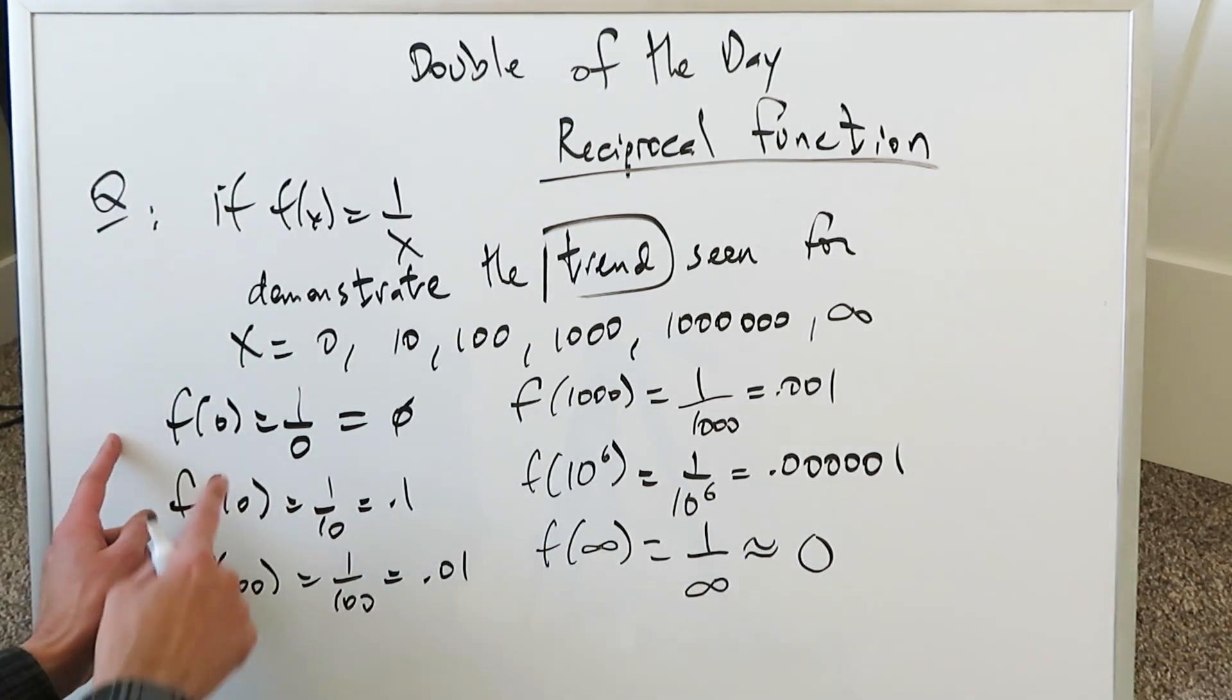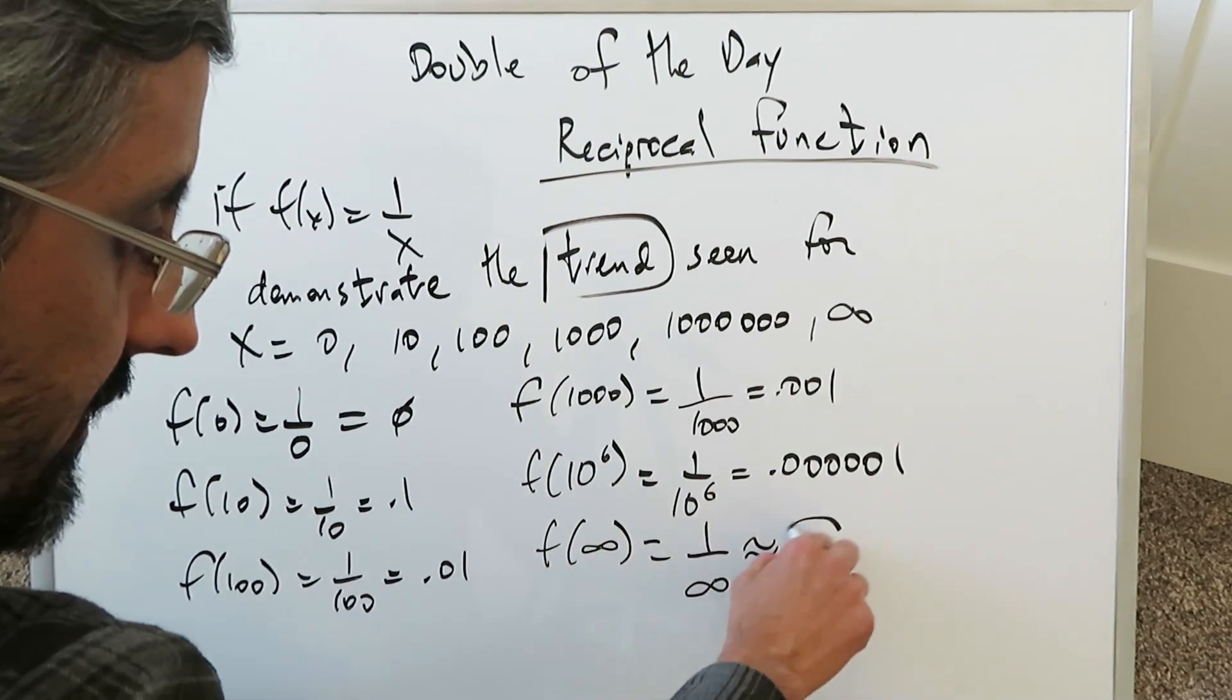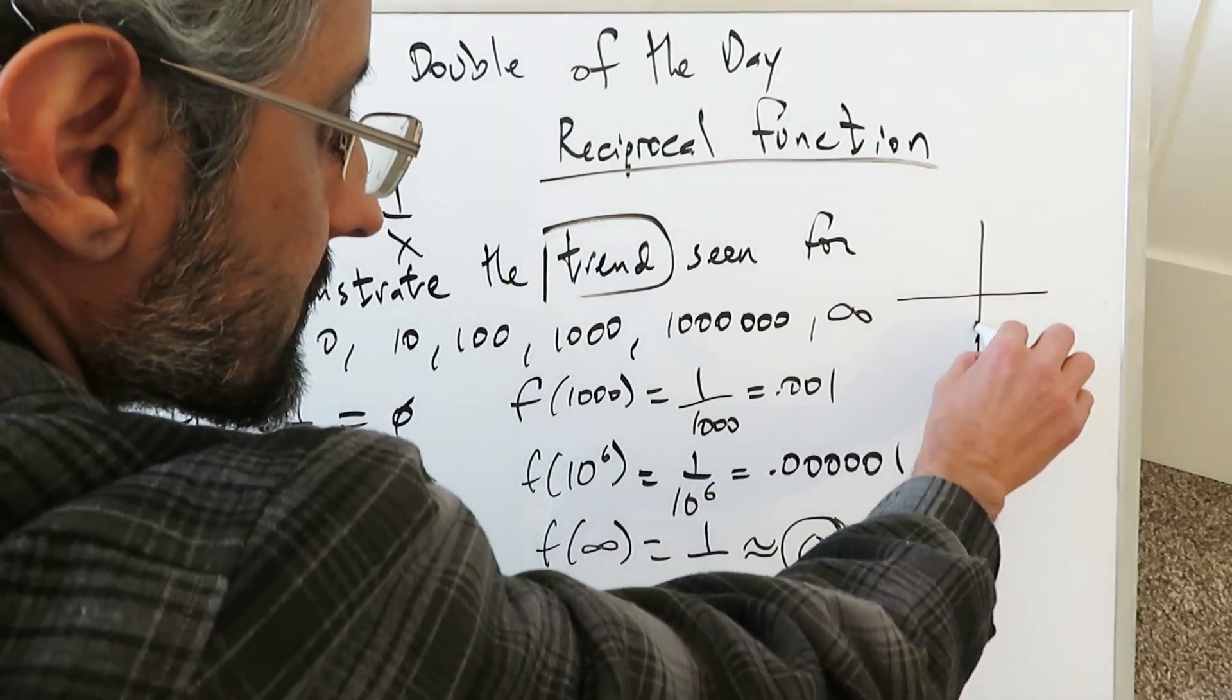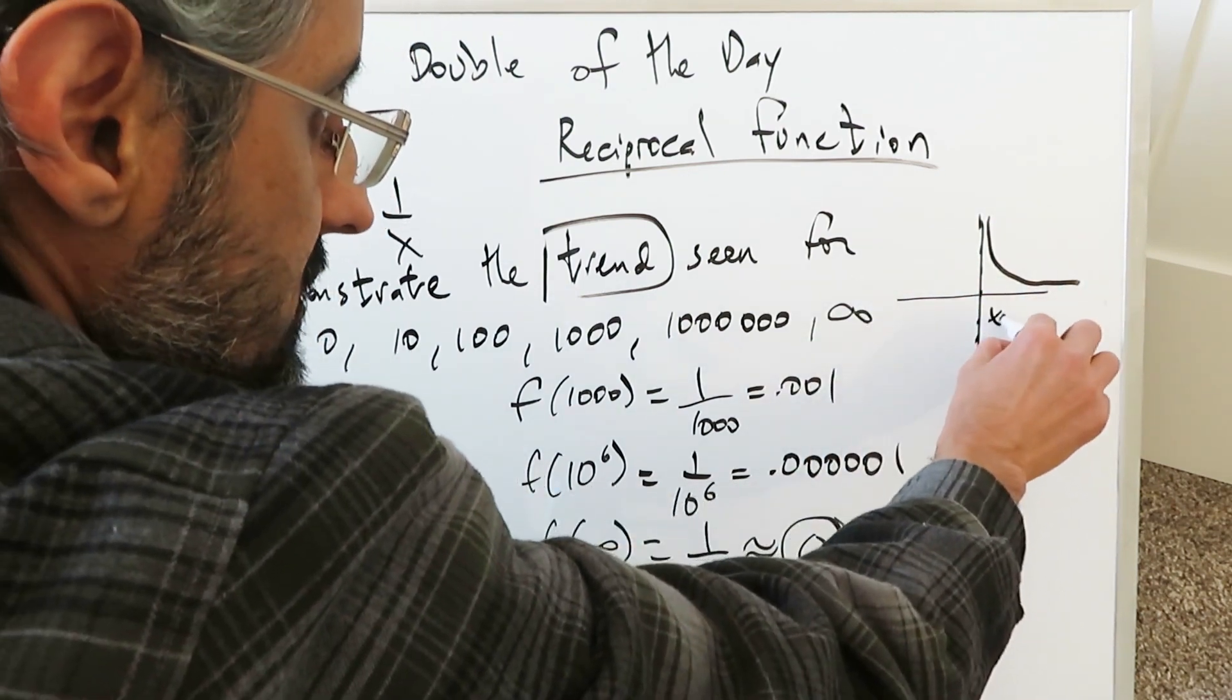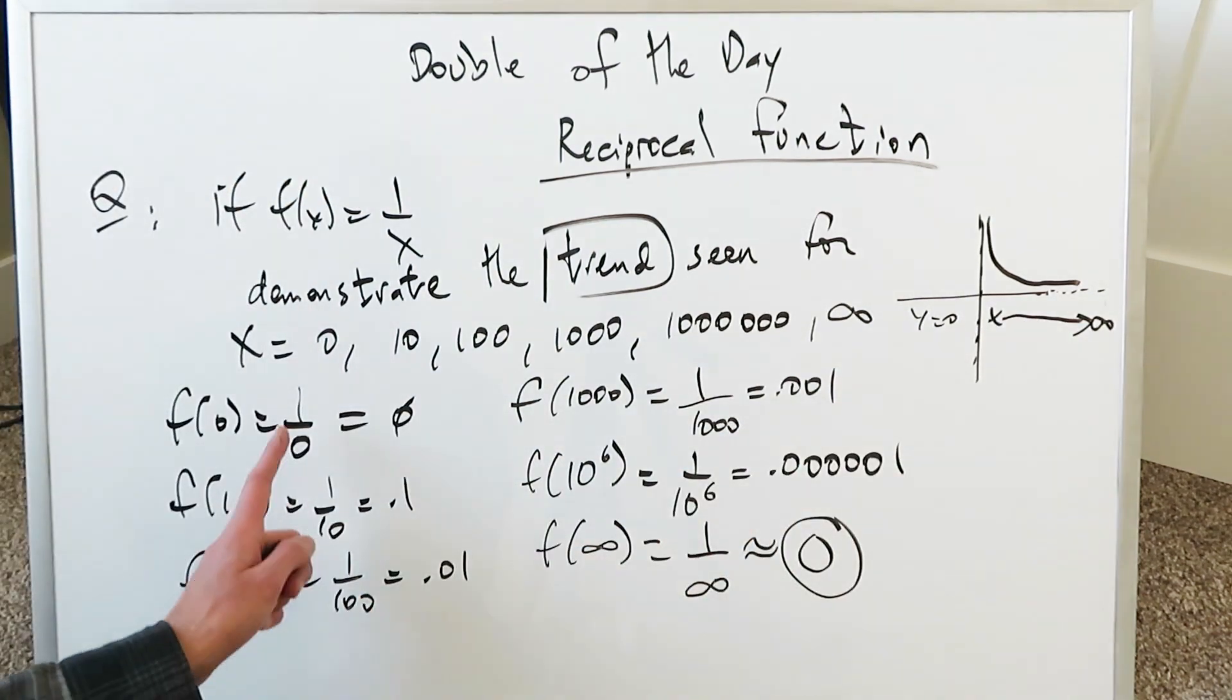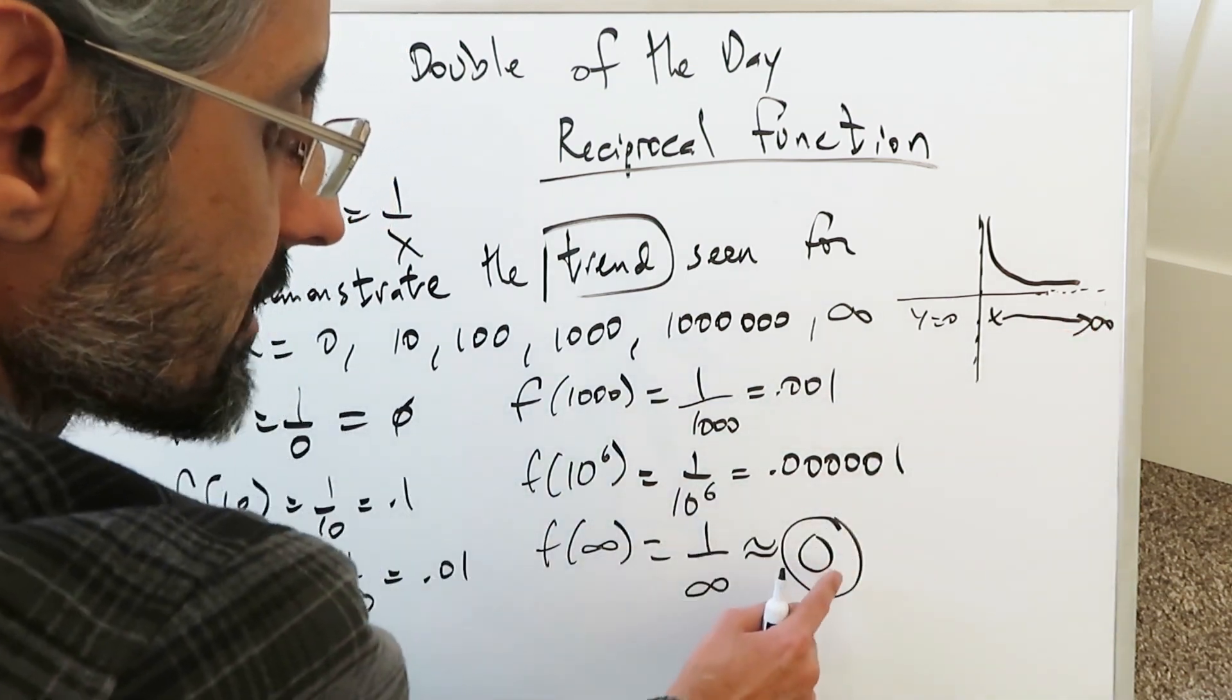The trend I'm seeing is this. When you're putting an x-axis value of 0, you have undefined. But as you start putting larger and larger x-axis values, your function starts to approach 0. And this right here is a very good concept of limit. You can understand this very well in terms of your graph. When x equals 0, you have a vertical asymptote. Your function is never touching it, but it's grazing it. And then as you become larger in terms of your x-axis value towards infinity, your function is approaching another asymptote, which is your horizontal asymptote, y equals 0.